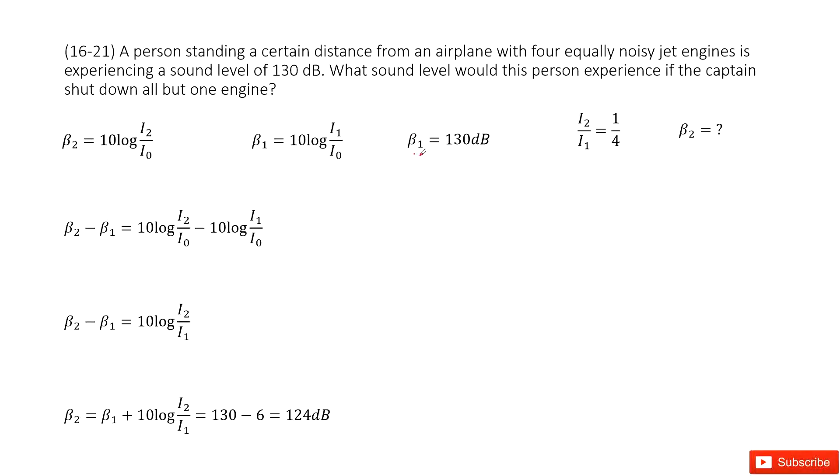So we write it as beta 1, and then in the second case there is only one engine work, and we need to find the sound level for case 2. So we write it as beta 2.